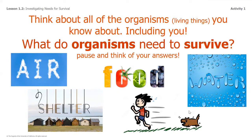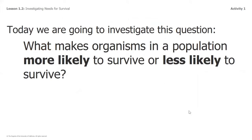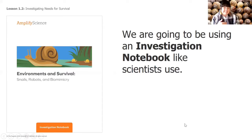The bar graph showed us that over time there are fewer snails with yellow shells in the population — a lot of the yellow-shell snails didn't survive. To help us figure out what happened, we are going to investigate this question: what makes organisms in a population more likely or less likely to survive? You're going to use your investigation notebook. If you prefer to write in it and send me a picture, that's fine, or I'll post it on Google Classroom and you can type in the document.